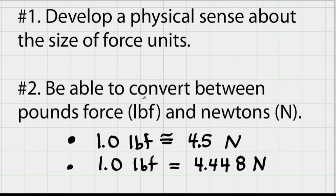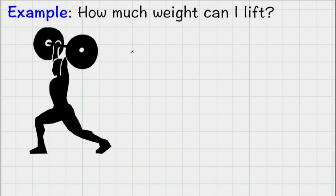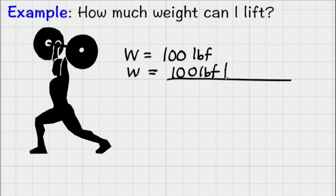To illustrate these two ideas, let me do an example. So I might ask the question, how much weight can I lift? And let's suppose I can lift 100 pounds, so I'll write down 100 pounds force to get force units. And then I can convert this to SI units just like this. I'll write 100 pound force, and then I remember that if I have one pound force, this is the same as 4.5 newtons to two significant figures, so I can put approximately there.